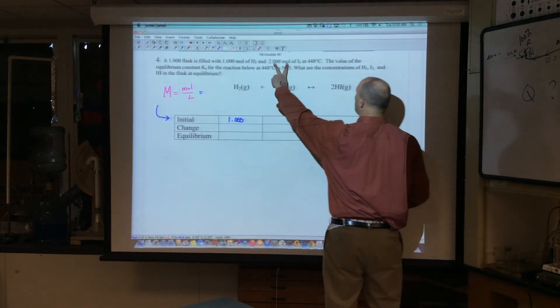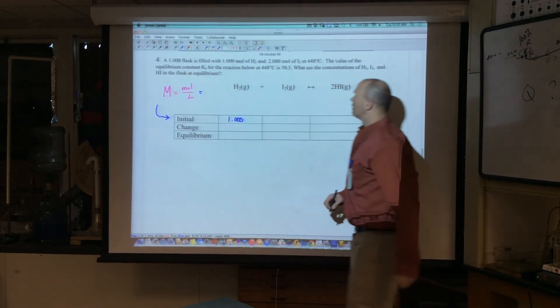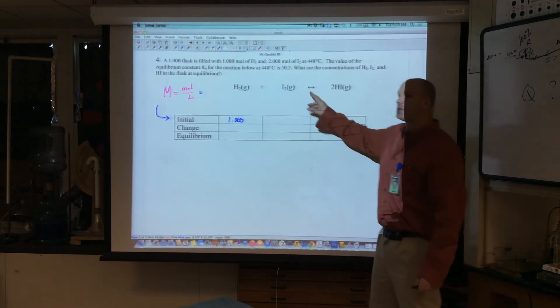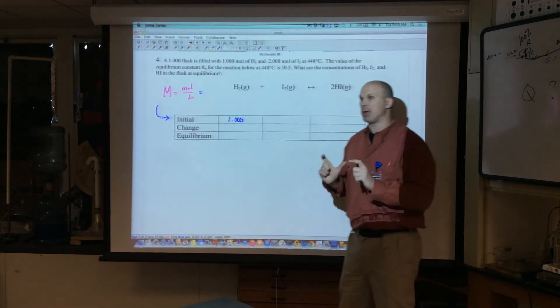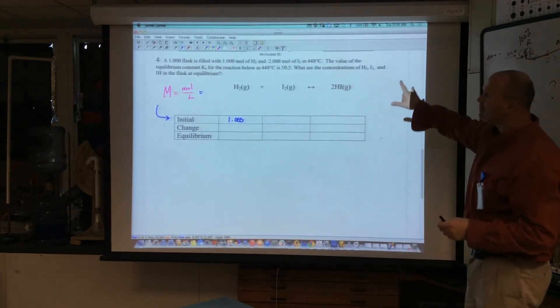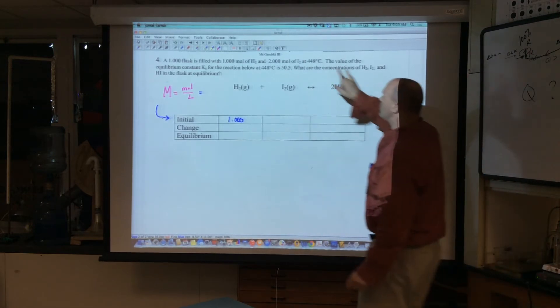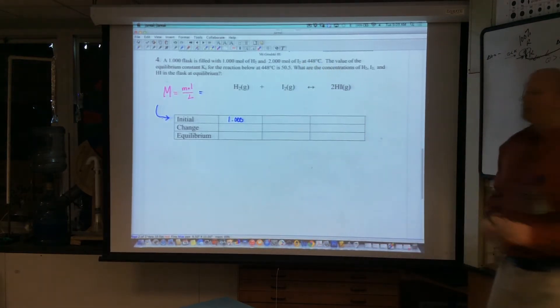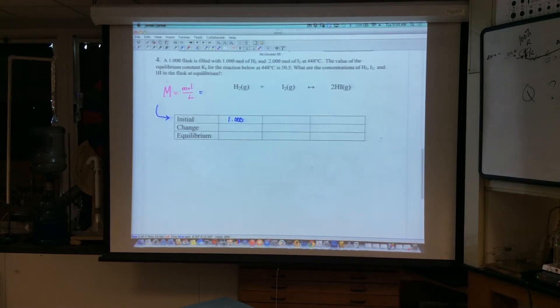In any case, so the next one is we've got 2 moles in the liter flask. Notice these are gases, but I'm still using molarity, so brackets will still be here. If these were partial pressures, I'd be using parentheses. But they're gases, but I'm still using moles over the volume, still doing a molarity here. In any case, you would obviously get 2.000 molar for the I2. And you'd have what? Zero.